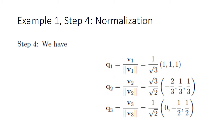The fourth and final step is to normalize each V vector. V1 is normalized by dividing by the square root of 3. V2 is normalized by dividing by the square root of two-thirds, which is equivalent to multiplying by the square root of three-halves. V3 is normalized by dividing by the square root of 2. The resulting orthonormal vectors are labeled Q1, Q2, and Q3, and these are the vectors that the Gram-Schmidt process generates.